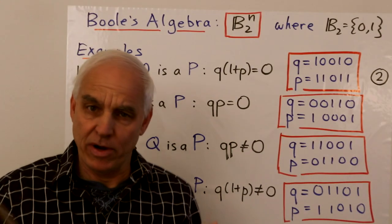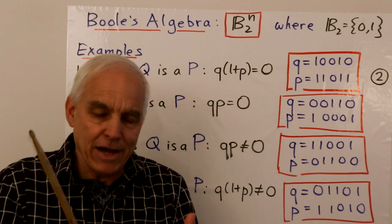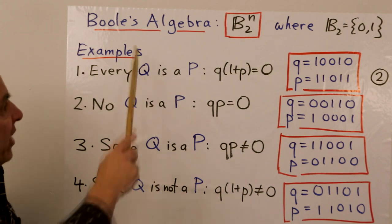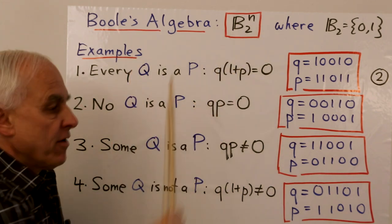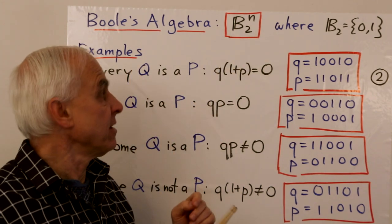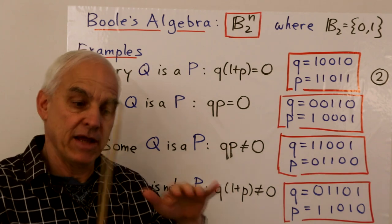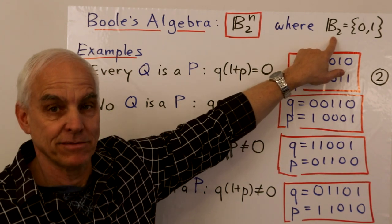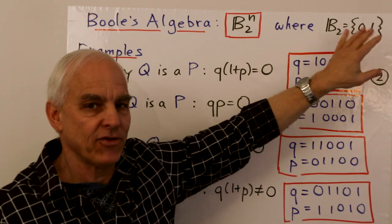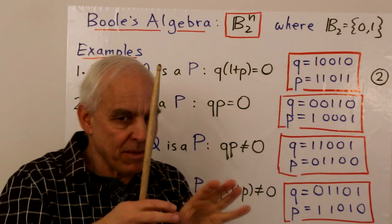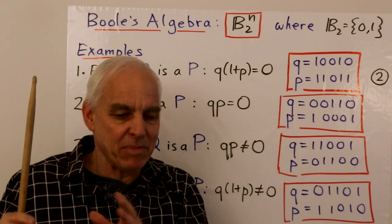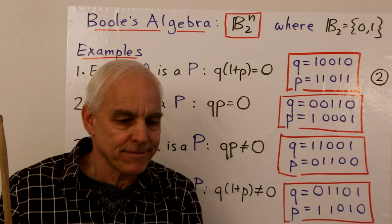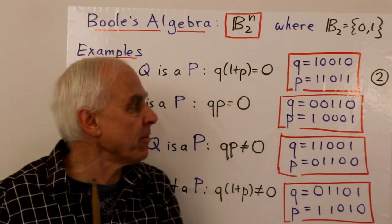So how does Boole's algebra work? How do we actually understand the meaning of the equations of Boole? Boole's algebra is really working in this vector space B₂ⁿ — an n-dimensional space over the Boolean byfield B₂, which is {0, 1}. This is much like a field, but probably should be kept separate from a field; it's a byfield with slightly different arithmetic.